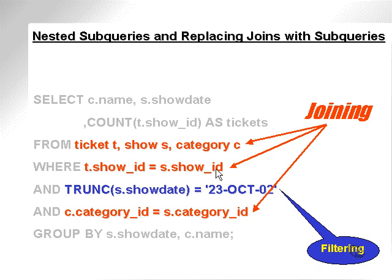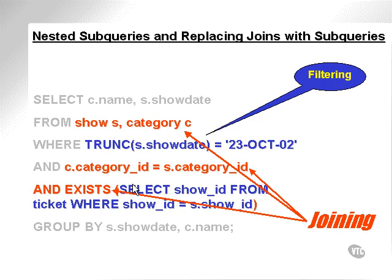After that, we would actually apply the join between the ticket and the show table. So these two lines would be the other way around, as shown here. What I've done is I've taken out the access of the column, or the count function, from the ticket table. We'll see why in a minute.